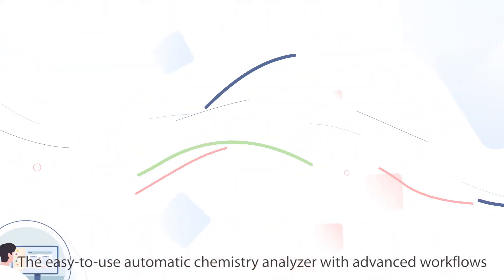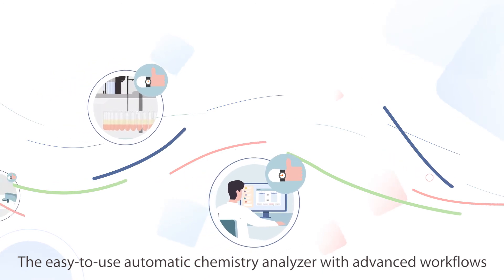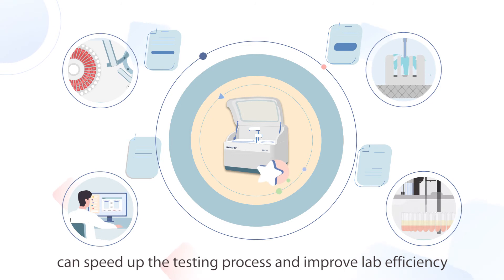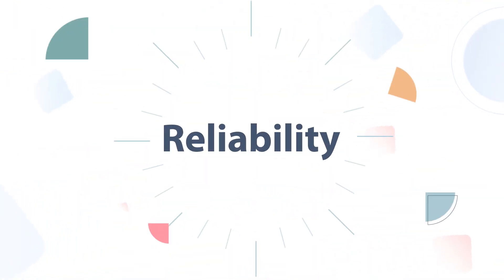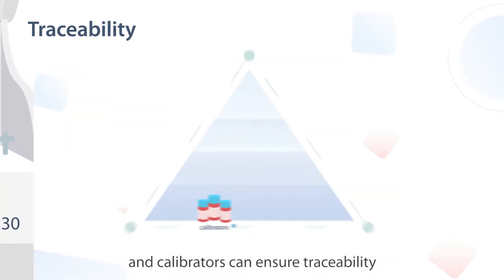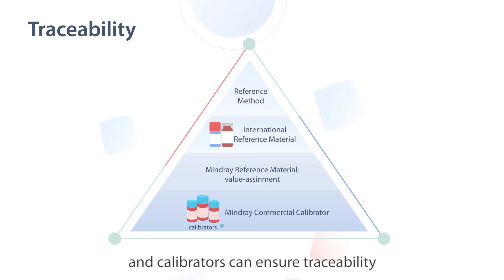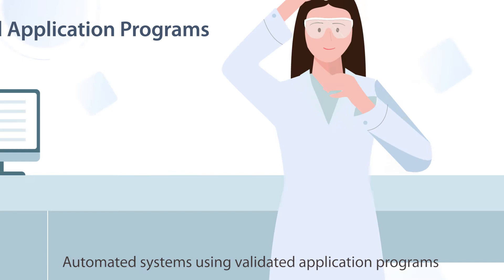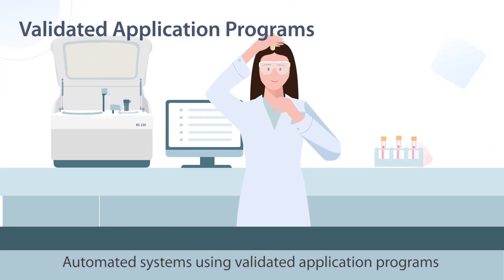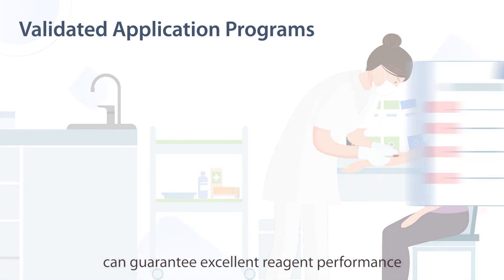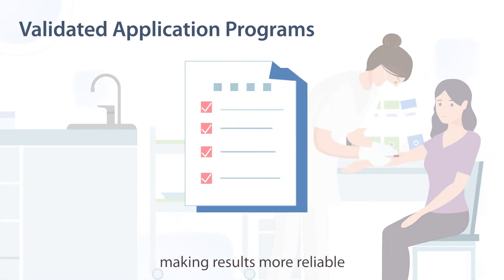The easy-to-use automatic chemistry analyzer with advanced workflows can speed up the testing process and improve lab efficiency. Automated systems using original reagents and calibrators can ensure traceability, making results more accurate and comparable. Automated systems using validated application programs can guarantee excellent reagent performance, making results more reliable.